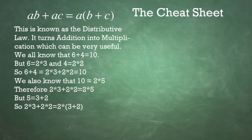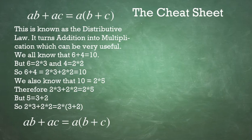Therefore, 2 times 3 plus 2 times 2 equals 2 times 5. But 5 equals 3 plus 2. So 2 times 3 plus 2 times 2 equals 2 times 3 plus 2.